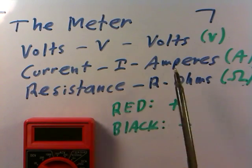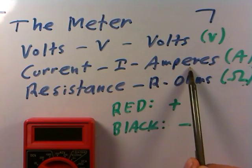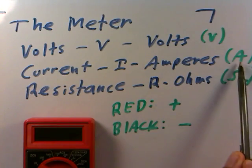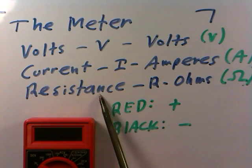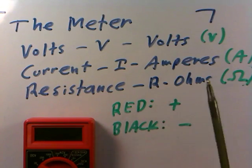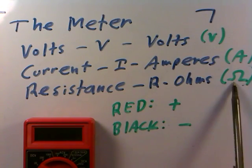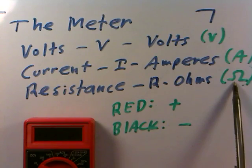Current is given the symbol I, units of amperes or amps. How many amps are flowing? Units are given symbol A. Resistance here is usually given the symbol R, has units of ohms, and the Greek letter omega is used to signify resistance.